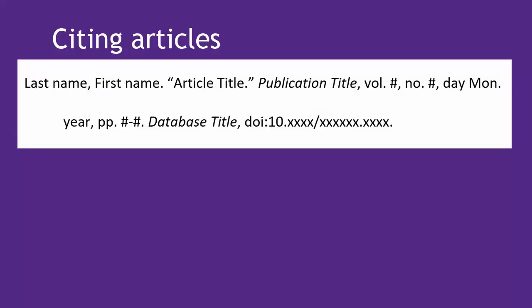When citing an article, you need to find the following information: the name of the author, title of the article, title of the journal, volume and issue if you have it, publication date written as day, month, year — or minus the day and/or month if you don't have that — and page numbers.